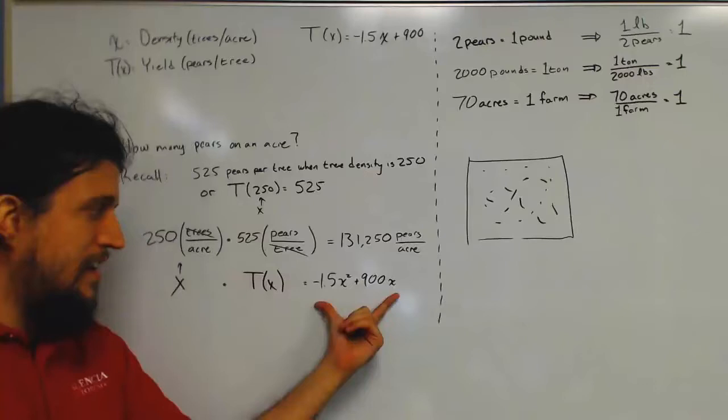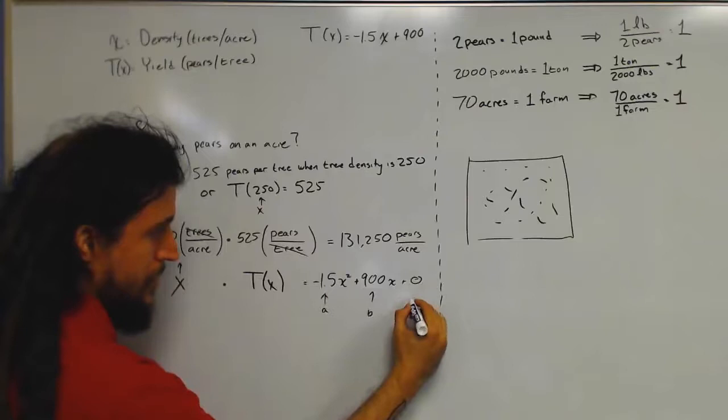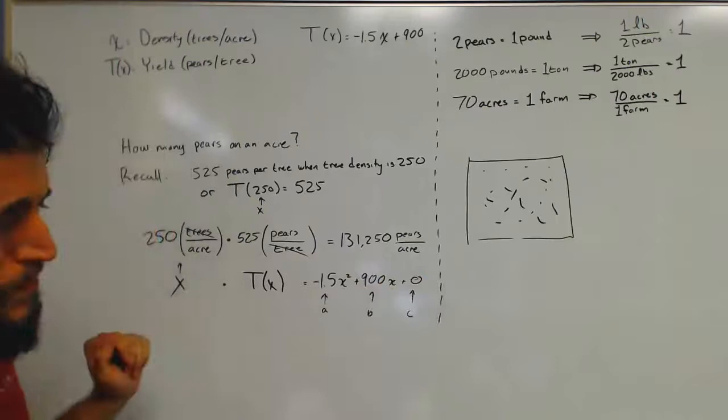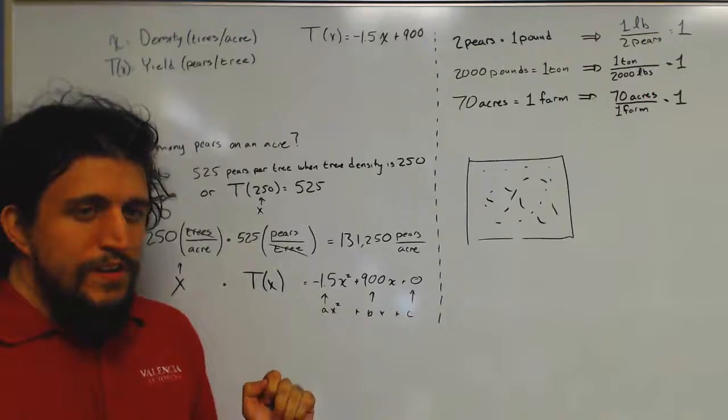Where this is our a, this is our b, and we do have a c on the end here, although it's equal to zero. So if you don't see anything on the end, then it's basically zero. And so now we have something that's in this form. And now we can apply things like quadratic formula if we need to.